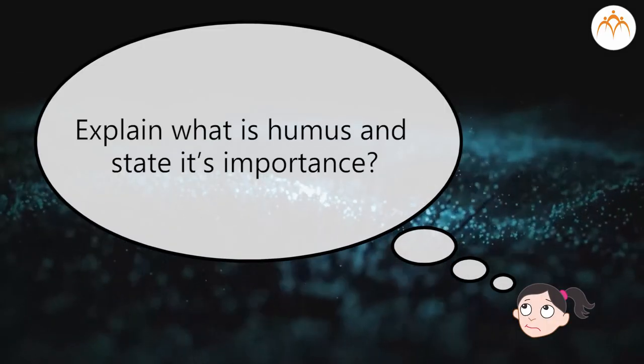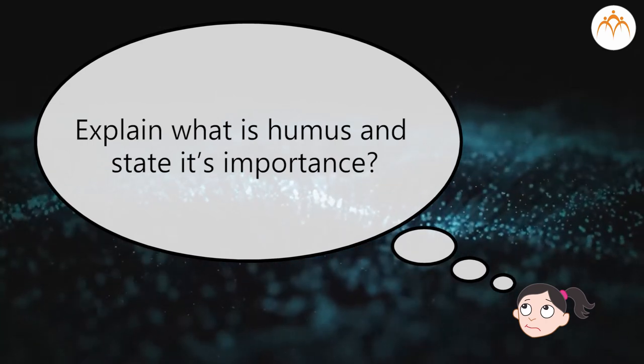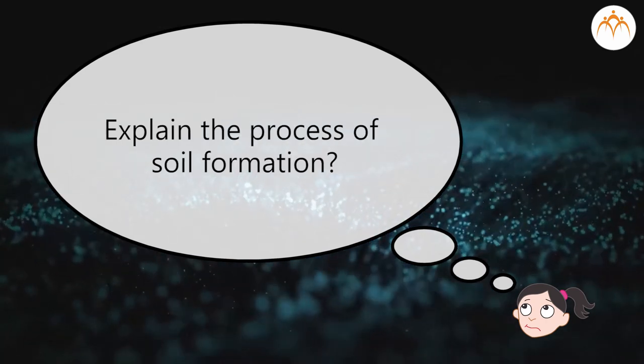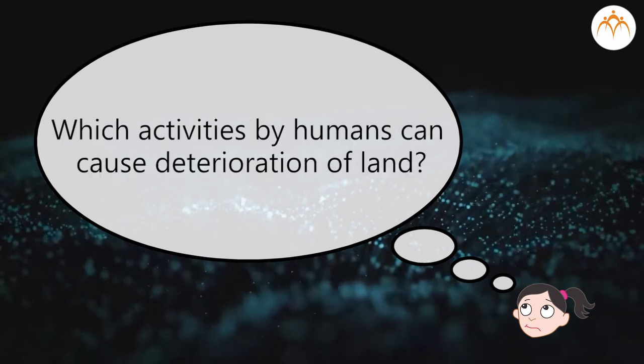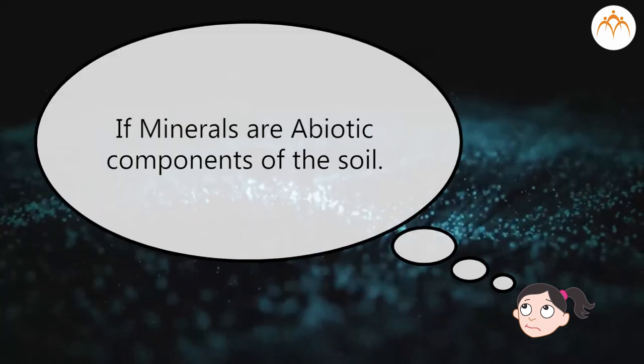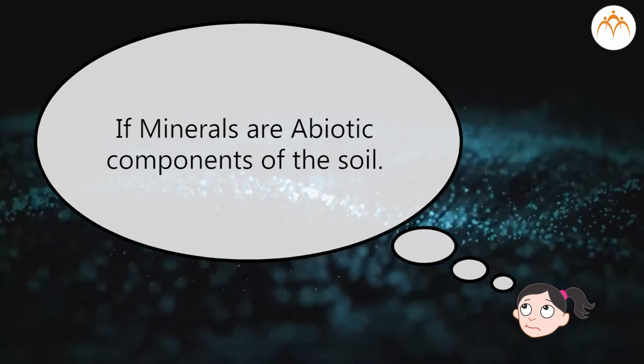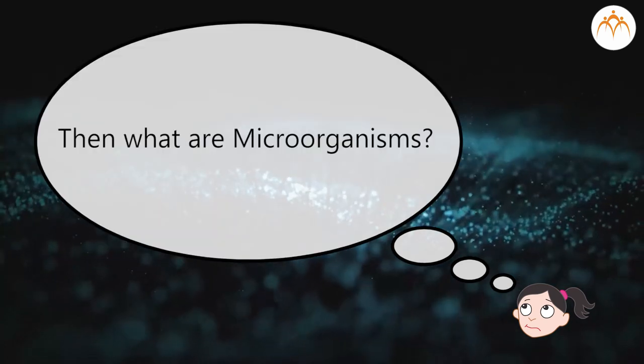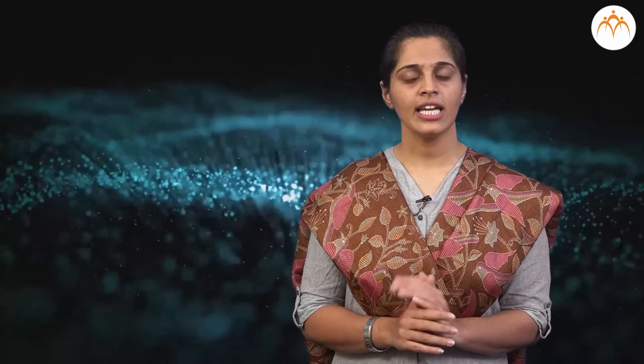Try to answer the following questions: Explain what is humus and state its importance. Explain the process of soil formation. Which activities by humans can cause deterioration of land? If minerals are abiotic components of the soil, then what are microorganisms? In case you have not followed any concept or have difficulty answering the above questions, go through this session again and read the chapter thoroughly.